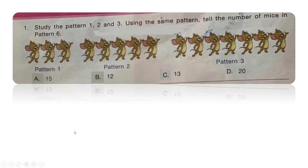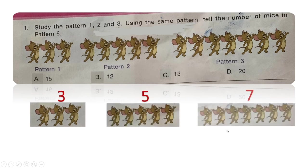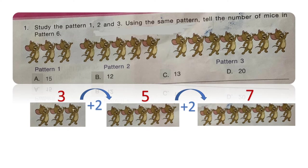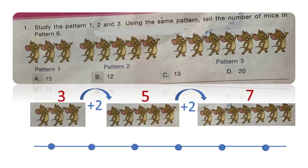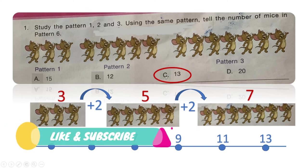Pattern 1 has 3 mice, pattern 2 has 5 mice, and pattern 3 has 7 mice. That means each pattern is adding 2 mice to get to the next pattern. Drawing a number line with 6 spots and incrementing by 2 each time: starting with 3, then 5, 7, 9, 11, and 13. So our 6th pattern is going to have 13 mice. The right answer is option C.